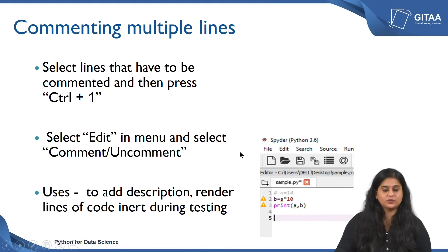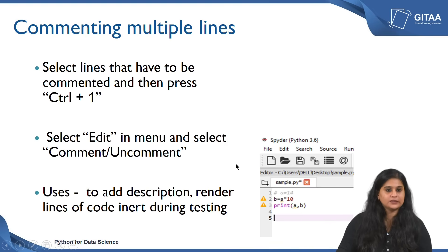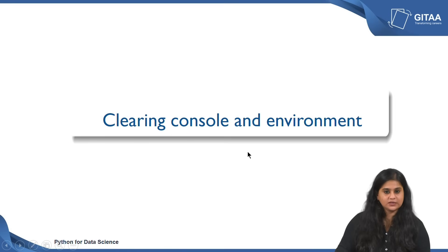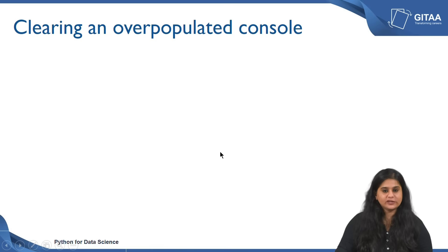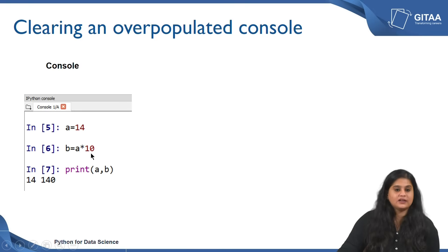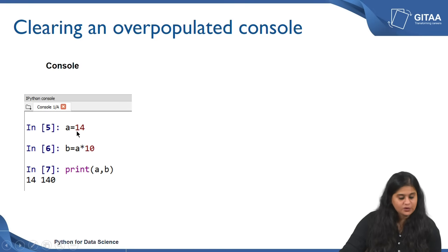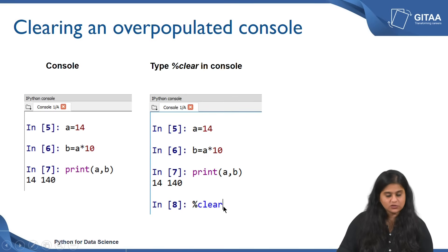Till now we have seen how to execute an entire file at once, how to execute few lines of code, and how to use commenting to add description. Now let us see how to clear the console and the environment. If you have an overpopulated console where you have printed multiple lines of code and multiple outputs, you might want to clear it and start afresh. You can type percentage clear in the console and once you hit Enter your entire console is cleared.